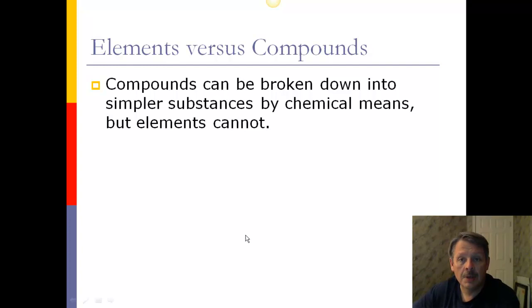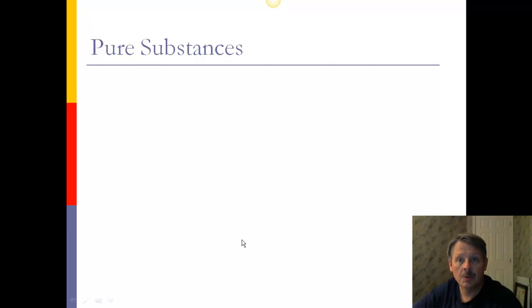Now, compounds can be broken down into simpler substances by chemical means. So they can be broken down, for example, into carbon, hydrogen, and oxygen, but elements cannot. So that's the way we look at them from a chemical perspective.